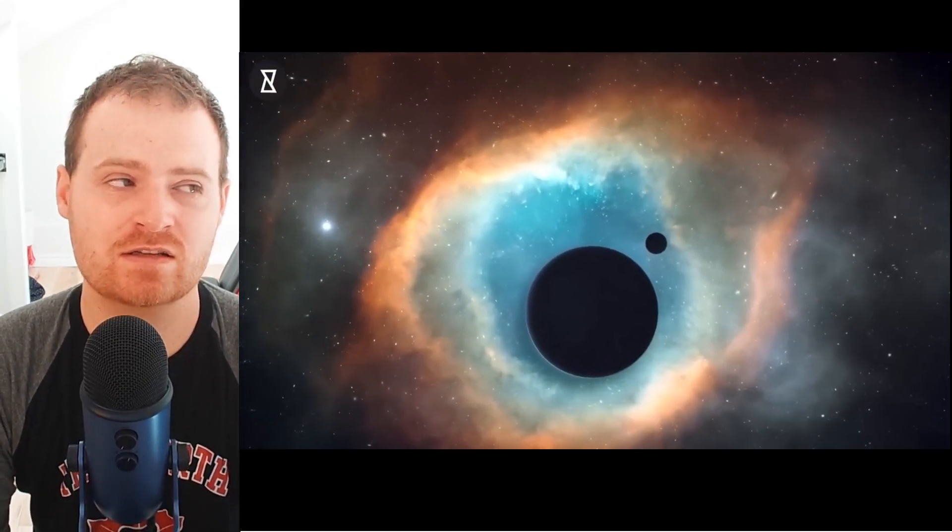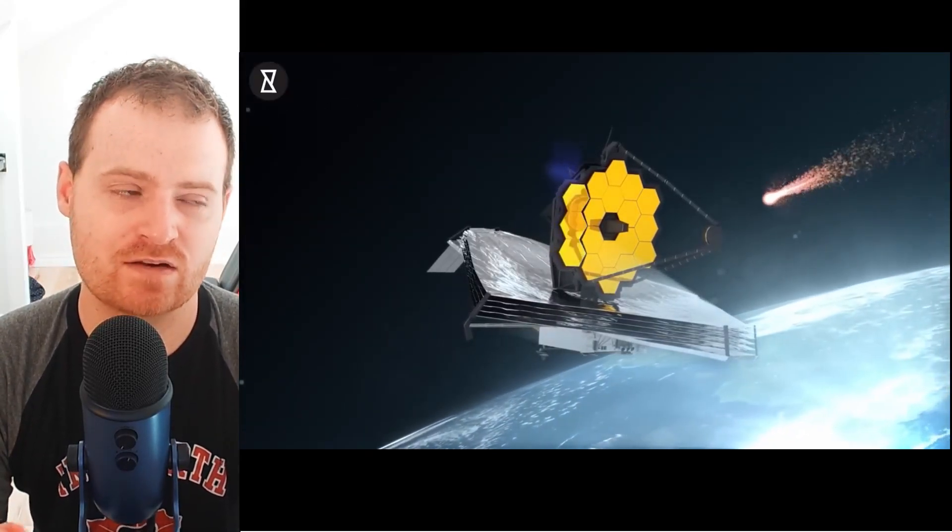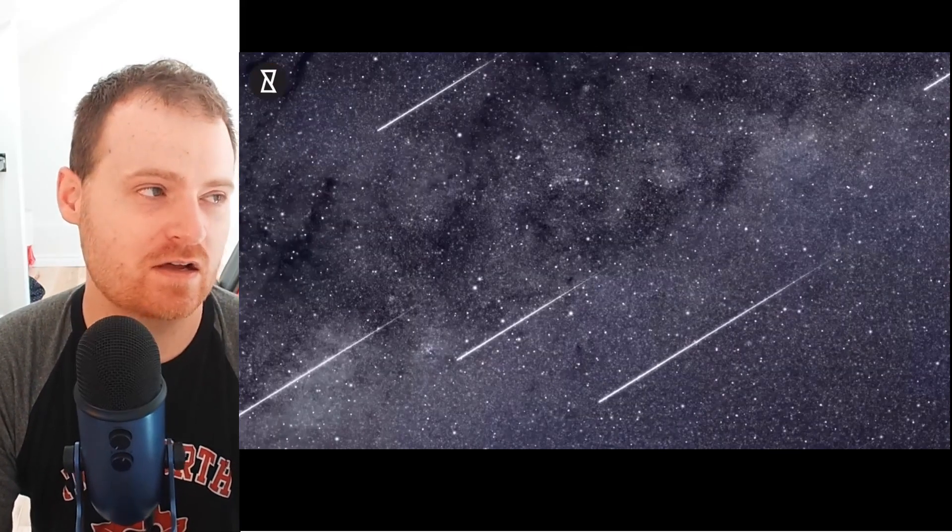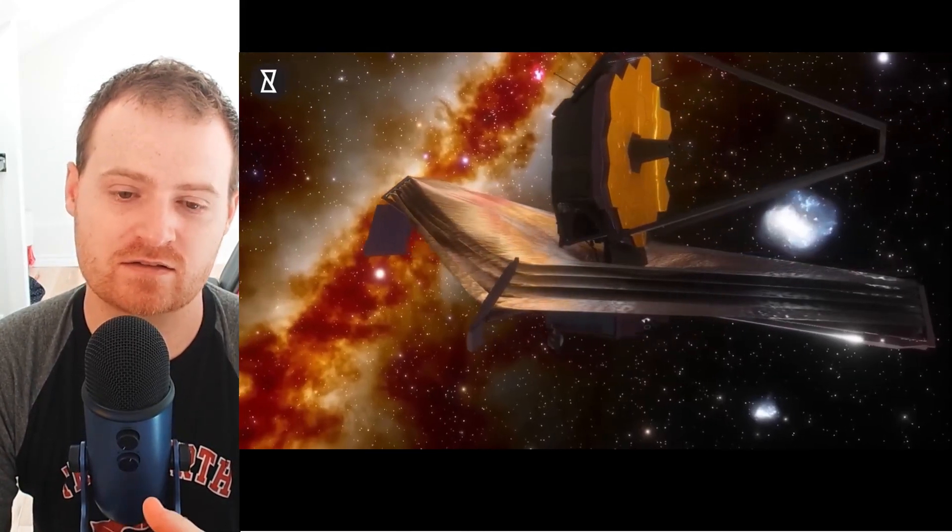And other challenges include the fact that out in space, objects travel at extremely fast speeds. So even something small, like a grain of dust, if it runs into the James Webb and hits it, can have the energy of a bullet and cause massive damage to the mirrors of the telescope.